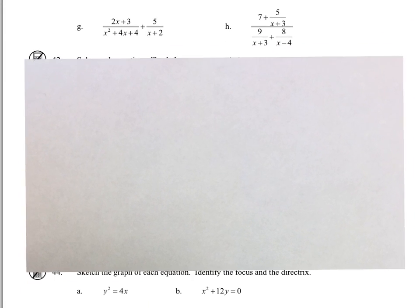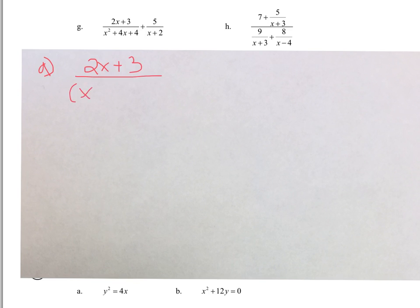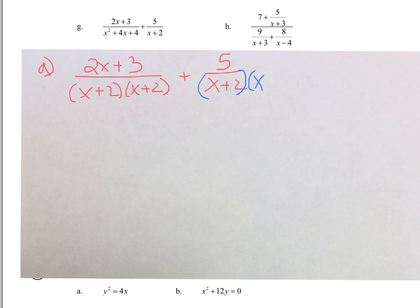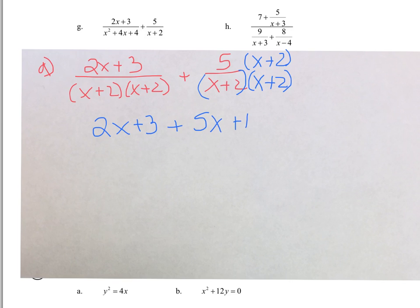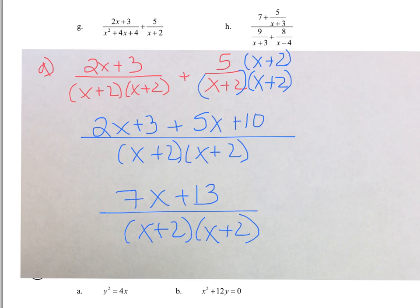And now for G. Before we can get a common denominator, I need to factor the denominator on the left. Because the fraction on the left has denominator X plus 2 times X plus 2, that's going to be our common denominator. Multiplying by X plus 2 on the right fraction gives us 2X plus 3 plus 5X plus 10. Combining like terms: 7X plus 13. This is our final answer — nothing simplifies or reduces.